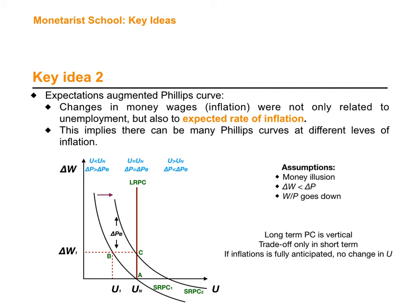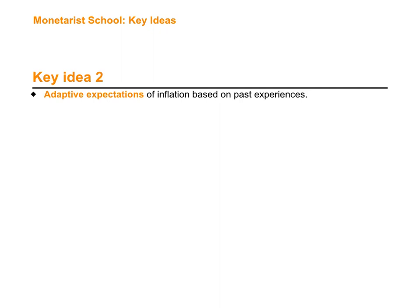So the long-term Phillips curve will be more like the classical aggregate supply, meaning that an increase in money is going to lead to increasing prices only. In the long term, the monetary school coincides with the classical school. Now we continue with key idea number two: adaptive expectations.